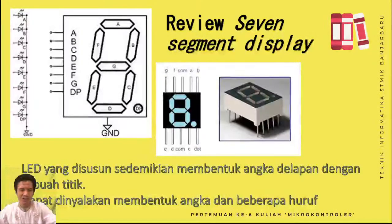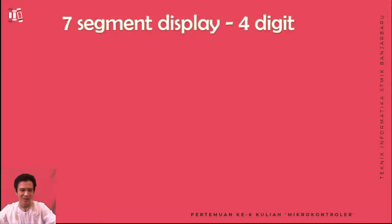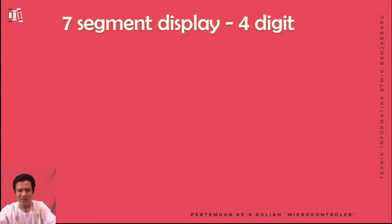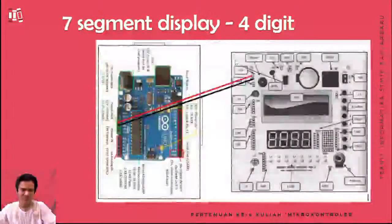Dia bisa dinyalakan membentuk huruf ataupun angka, tapi angka yang bisa dibentuk itu dari 0 sampai 9. Huruf tidak semua bisa — dari alfabet A sampai Z hanya beberapa saja. Misalkan A bisa yang kecil atau besar, B bisa kecil atau besar, C bisa, D bisa, E bisa, F bisa, G bisa, H bisa, I bisa, J, K agak aneh karena menyerupai huruf lain — dan seterusnya. Nanti bisa dilihat dan dibayangkan kira-kira huruf apa saja yang bisa dibentuk dari 7 segment.